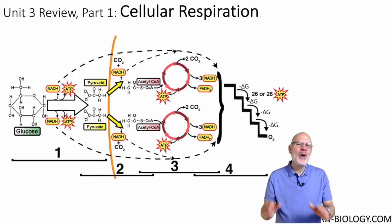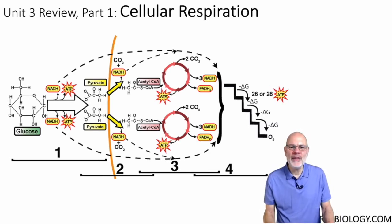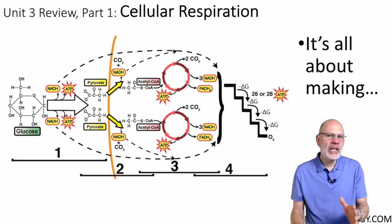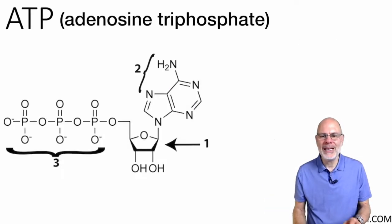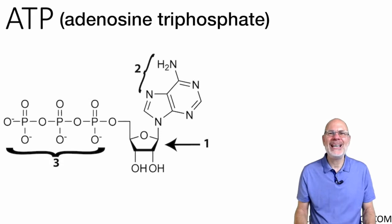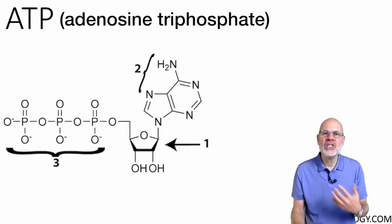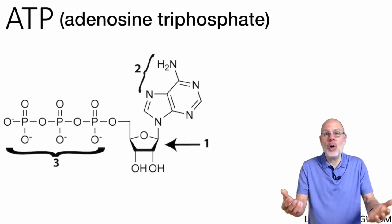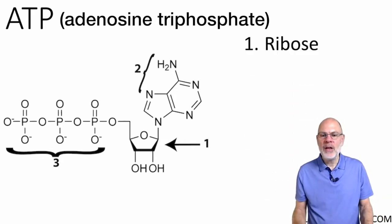What we're going to do this week is review cellular respiration. That's part of Unit 3 of the AP Biology curriculum. Cellular respiration is all about making ATP, adenosine triphosphate. That's the molecule that cells use to carry out all of the work that they do to maintain life.